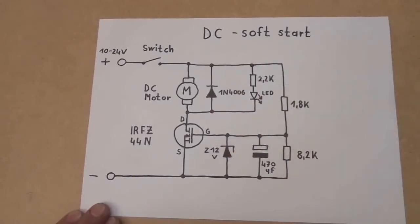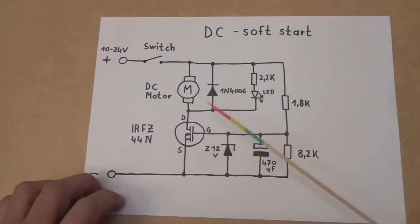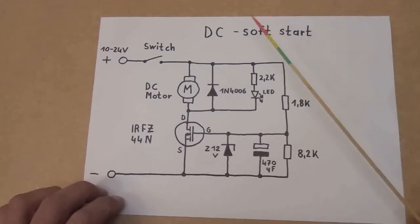Here, the heart of the circuit is an N-channel MOSFET, and we are using this MOSFET in circuit. Here is a variable resistor. So let me quickly go over the circuit and how it works, and then let's build it.